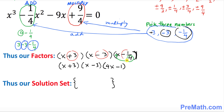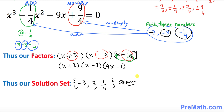Finally, our solution set is found by changing the signs of these numbers. Negative 3 becomes positive 3 (wait — it becomes negative 3), positive 3 becomes positive 3, and negative 1 over 4 becomes positive 1 over 4. That is our answer. Thanks for watching — please subscribe to my channel for more exciting videos.